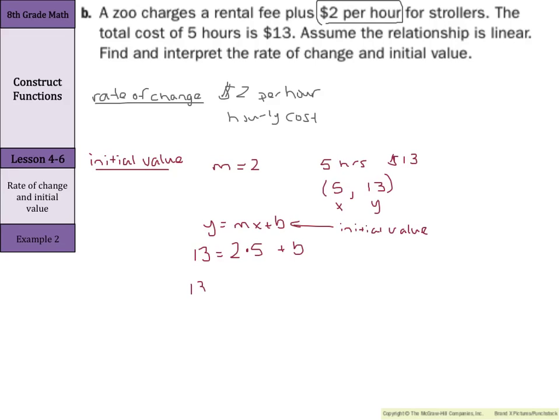As you solve, 13 is left on the left. 2 times 5 is 10 plus b. Subtract 10 on both sides to solve for b. 13 minus 10 is 3, so 3 equals b, or $3. Now, what does that $3 represent? We found the hourly cost for our rate of change, so this must be the rental fee. This means $3 rental fee.